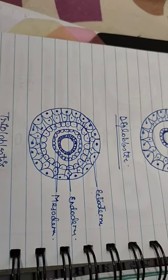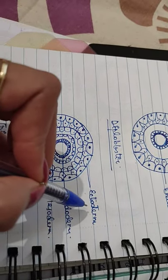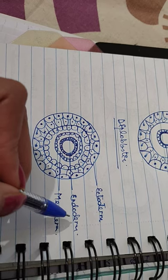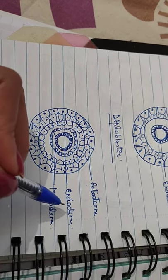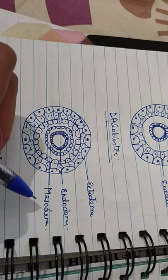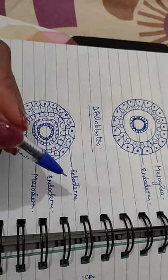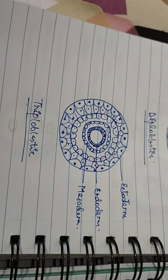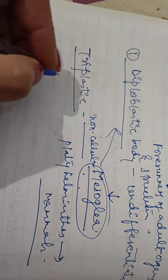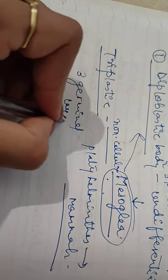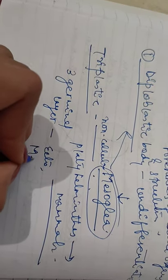For example, our nervous system is ectodermal in origin. Our internal body parts like the small intestine are endodermal in origin. Our heart and muscles are mesodermal in origin. So now you can understand what ectoderm, endoderm, and mesoderm mean. This is a type of triploblastic body organization — from platyhelminthes to chordata, they all have three germ layers.